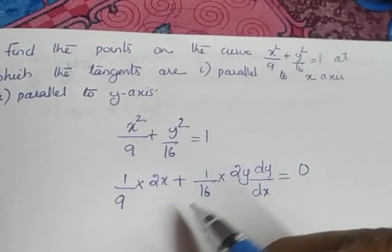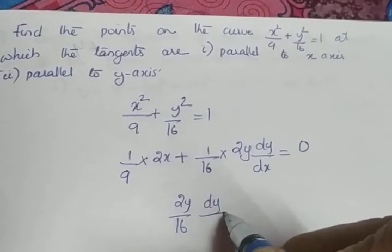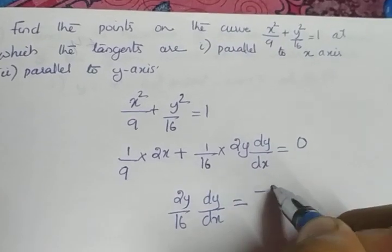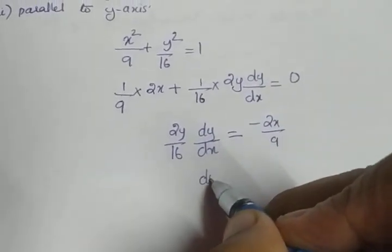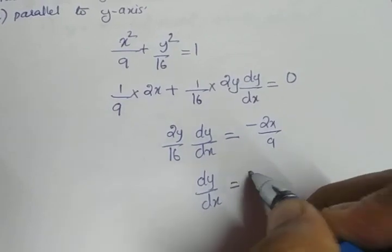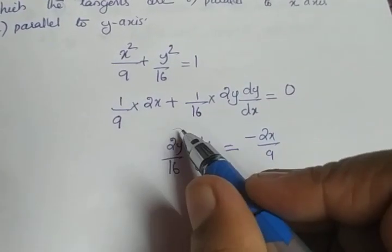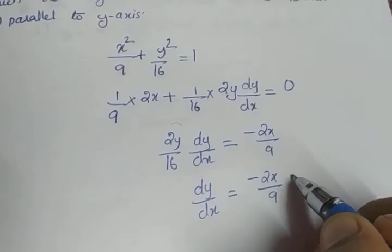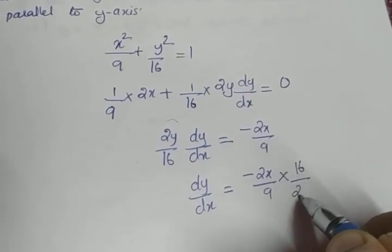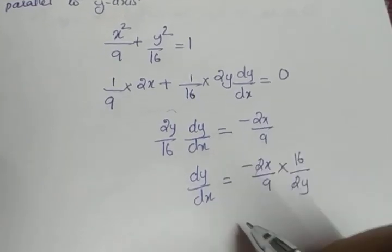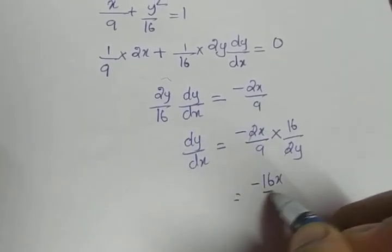Take this term to the right side, so we get 2y/16 · dy/dx = −2x/9. We need only dy/dx, so dy/dx = −2x/9 divided by 2y/16. Instead of dividing, take the reciprocal and multiply by 16/2y. This gives dy/dx = −16x/9y.